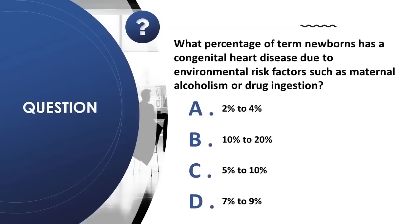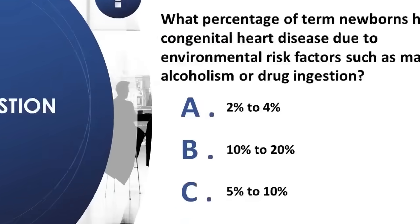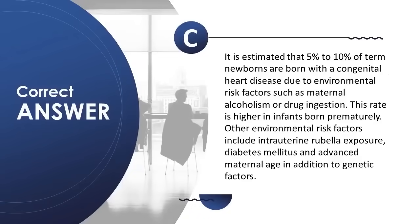Question 3: What percentage of term newborns has congenital heart disease due to environmental risk factors such as maternal alcoholism or drug ingestion? A) 2–4%, B) 10–20%, C) 5–10%, D) 7–9%. Correct answer is C. An estimated 5–10% of term newborns are born with congenital heart disease due to environmental risk factors. Other environmental risk factors include intrauterine rubella exposure, diabetes mellitus, and advanced maternal age, in addition to genetic factors.